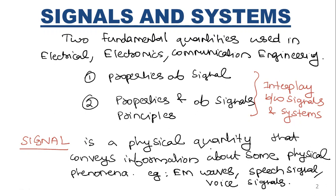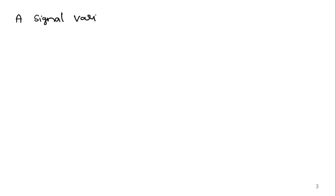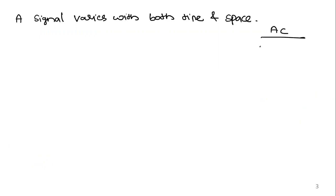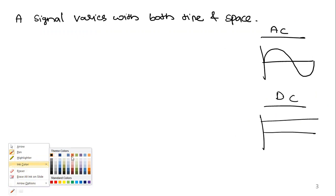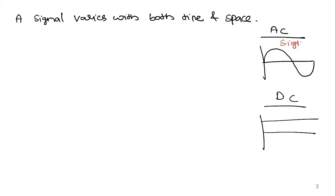As we studied in electromagnetic theory, an electromagnetic wave varies with both time and space. So a signal is something which can vary with time and space. For example, consider an alternating current — it varies with time. A DC current does not vary, so DC is not a signal. A signal must vary with respect to time or space.